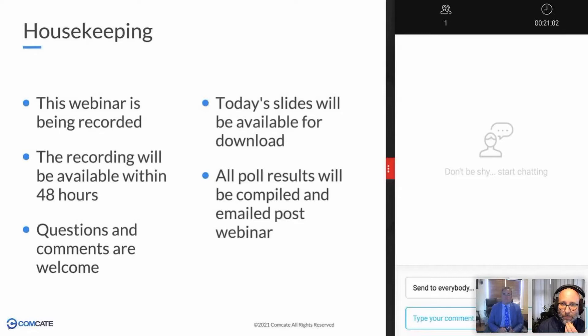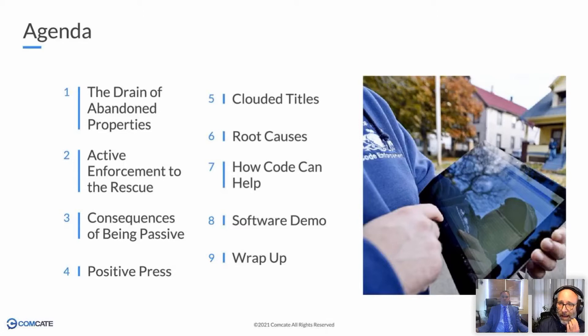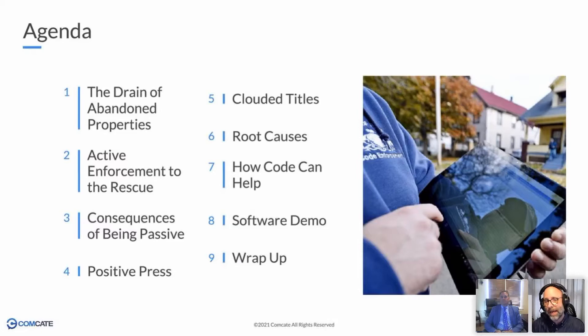The agenda for today: we're going to talk about the drain of abandoned properties on municipalities and the true cost of what's going on. We'll look at active enforcement to the rescue, consequences of being passive, positive press you get from being active in code enforcement, what a clouded title is and why it matters, the root causes of abandoned properties and vacant lots, how code can help, and a quick five-minute demo of Comcate. Then we'll wrap up with a survey.